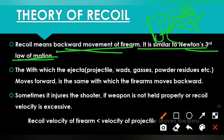If you put force on something, the force will ripple back. Similarly, if you do firing, when the projectiles come out of the barrel, the force will revert back. So this backward motion we call recoil.